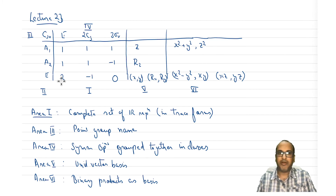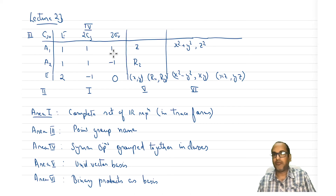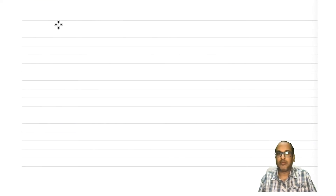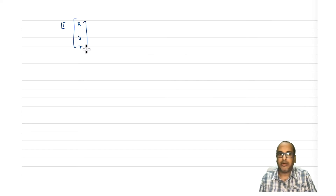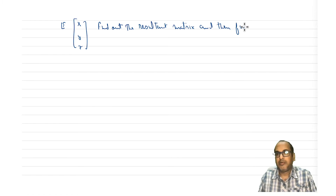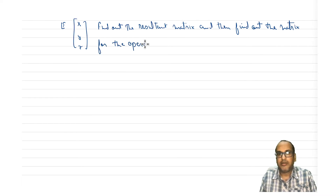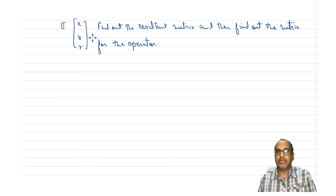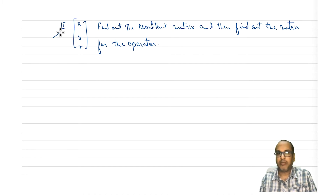If we want to know which unit vector forms the basis of which representation, that is easy. What you do is you create a matrix — for example, if you want to know what X, Y and Z do, you carry out the transformation E on X, Y, Z together, find out the resultant matrix, and then find out the matrix for the operator. This we have already seen. We can do it for E, C3, sigma V, or any given operation. We can apply it to the X, Y, Z matrix and find out the resultant matrix, which gives the matrix for the operator.